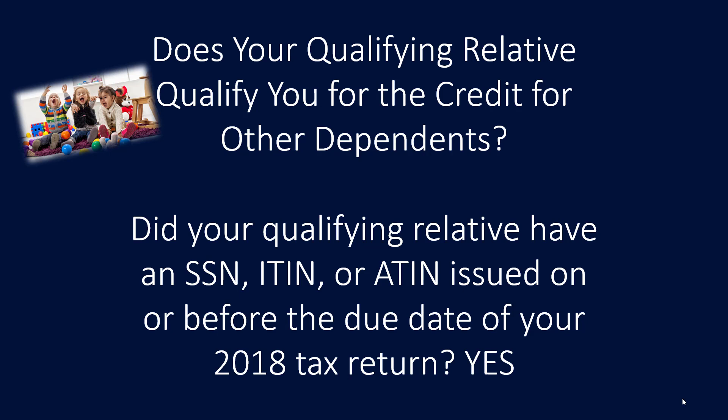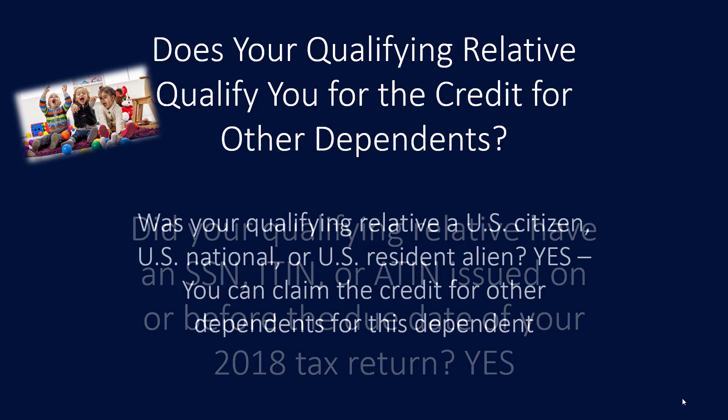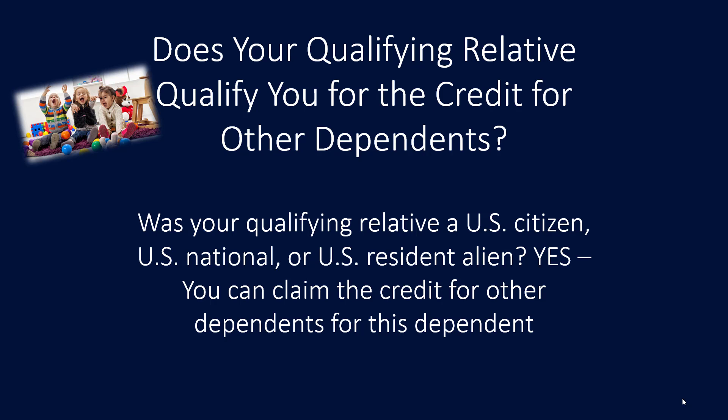Does your qualifying relative qualify you for the credit for other dependents? Keep in mind, this is a new credit for 2018. Did your qualifying relative have a Social Security number, an ITIN, or ATIN issued on or before the due date of your 2018 tax return? If yes, was your qualifying relative a U.S. citizen, U.S. national, or U.S. resident alien? If yes, you can claim the credit for other dependents. This credit is $500 per qualifying dependent, as long as the adjusted gross income on the tax return doesn't exceed $200,000, or $400,000 if filing jointly.